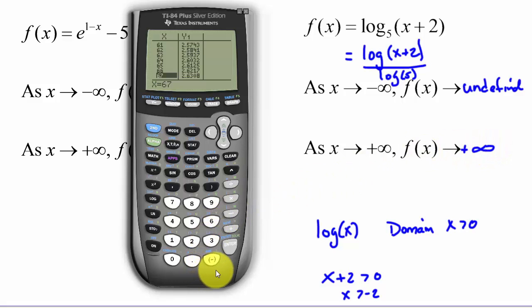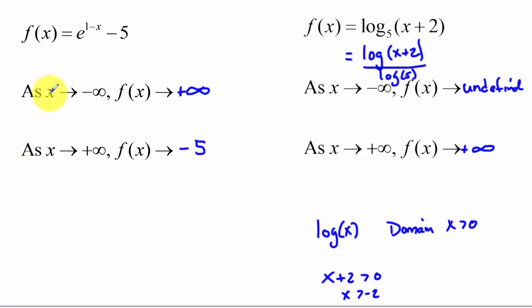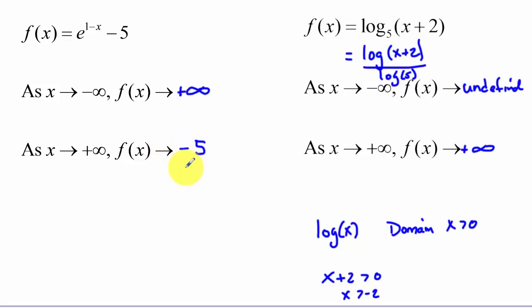We've covered our unit on end behaviors. We write them as two statements: what happens as x approaches negative infinity — the left side of the graph — and what happens to the y values as x approaches positive infinity — the right side of the graph. The easiest way to do these is using your graphing utility. Have a great day.